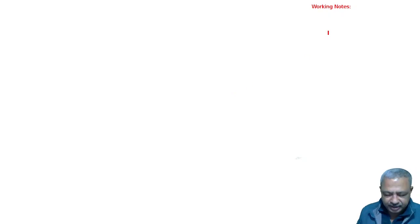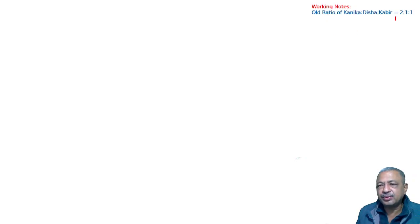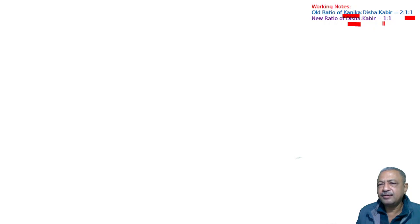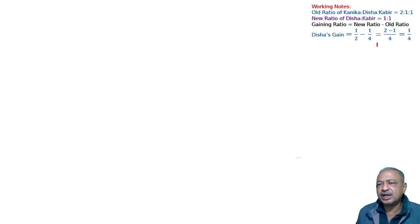For goodwill treatment, you need to calculate the sacrificing ratio and gaining ratio in retirement. The old ratio of Kanika, Disha, Kabir is 2:1:1. Since Kanika retires, Disha and Kabir's new ratio will be 1:1 — it remains the same. Then gaining ratio = new minus old. So Disha's gain = 1/4 and Kabir's gain = 1/4.